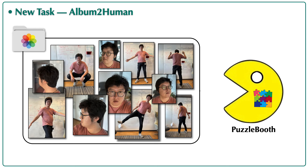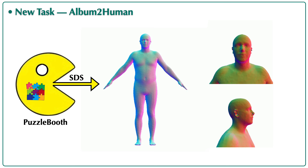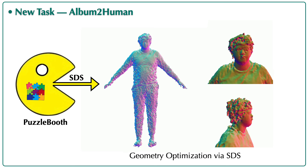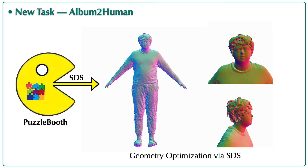To address this challenge, we propose a two-stage solution. In the first stage, we fine-tune a vision-language foundation model to process unstructured data into a structured library — we call this model Puzzle Booth. In the second stage, we distill 3D avatars from Puzzle Booth with shape and color via score distillation sampling, or SDS.